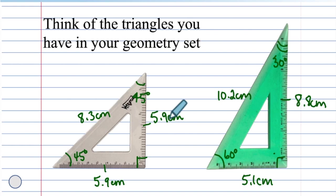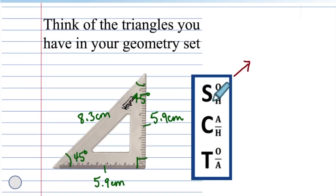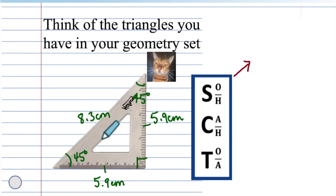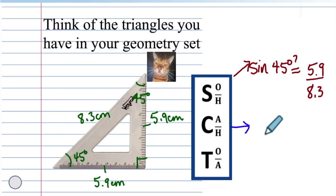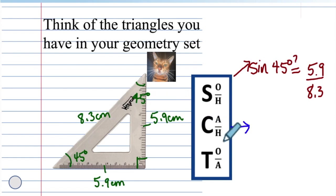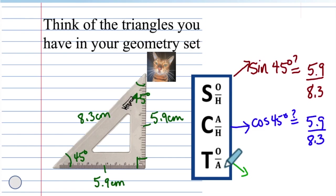Let's verify the trigonometric ratios — sine, cosine, and tangent — using these measurements. I want to know if the sine of 45 degrees is actually opposite over hypotenuse, if the cosine of 45 degrees is actually the adjacent over the hypotenuse, and if the tangent of 45 degrees is the opposite over the adjacent.